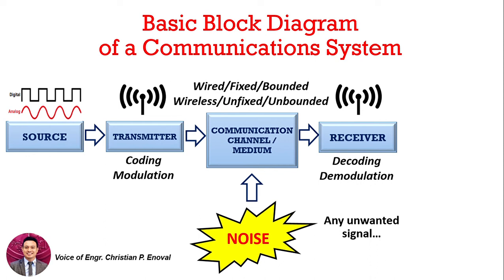There is noise in the communications channel, and you may ask what its effect is. It causes losses and interference, meaning our signal deteriorates. That's why in our receiver, we have filters, equalizers, and amplifiers to regain the original power of the signal transmitted over the communications channel — because what the destination receives should match what the source originally sent.